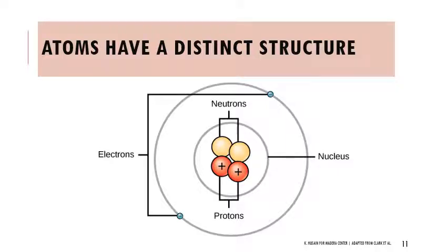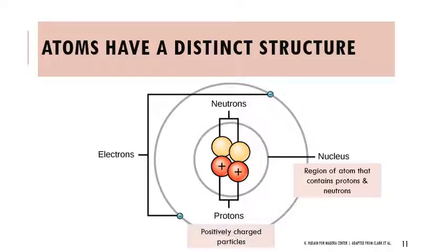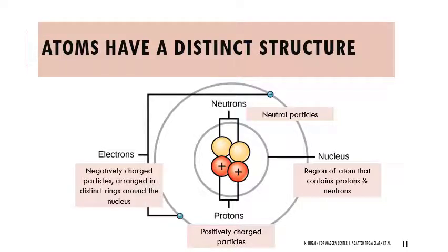When thinking about atoms — those units of elements — there's a distinct structure. We have the nucleus, which is the central region of the atom containing protons and neutrons. Protons are positively charged particles. Neutrons are neutral particles, as their name suggests. And electrons are negatively charged particles arranged in distinct rings around the nucleus. Sometimes electrons are shortened to a lowercase e with a minus sign. Protons are sometimes shortened to H+.